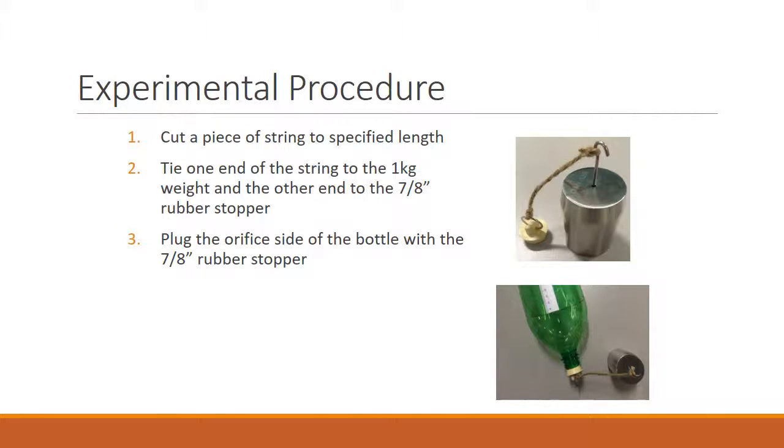Experimental Procedure. Cut a piece of string to a length between 15 and 35 cm. Using this string, tie one end to the weight and the other to the rubber stopper. The rubber stopper will then be placed in the orifice side of the bottle. Ensure the stopper is in firmly or it will be pulled off by the hanging weight once on the stand.